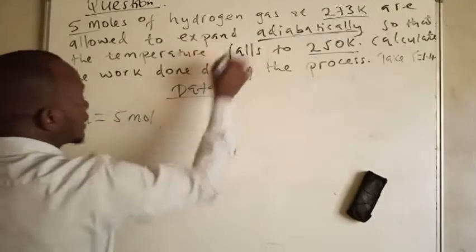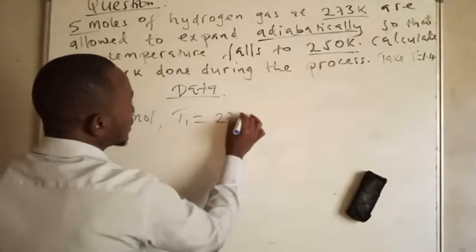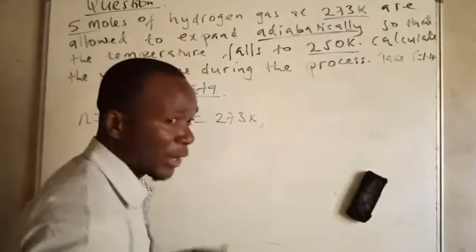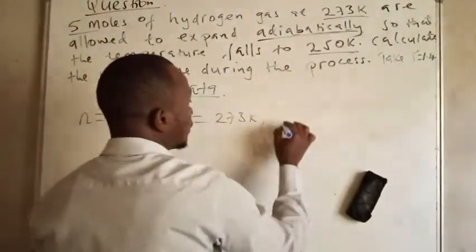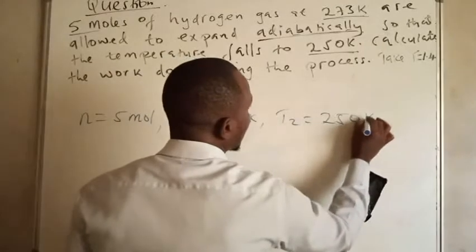Then we have the temperature 1, which is T1, 273 Kelvin. Then we have T2, the temperature 2, 250 Kelvin.